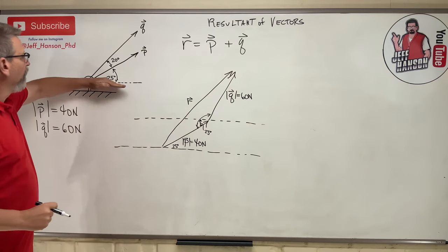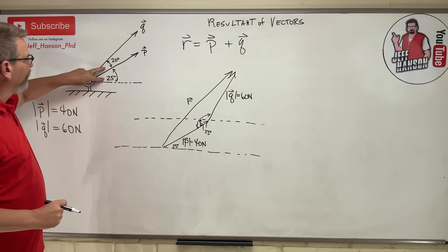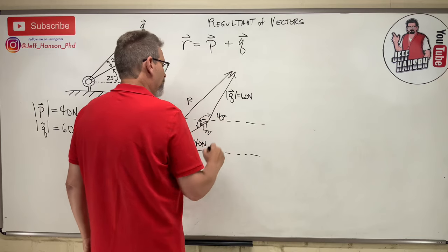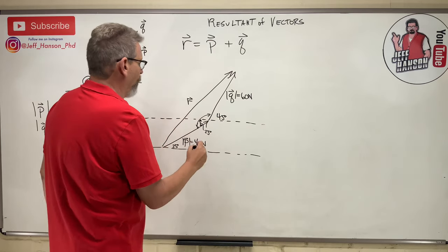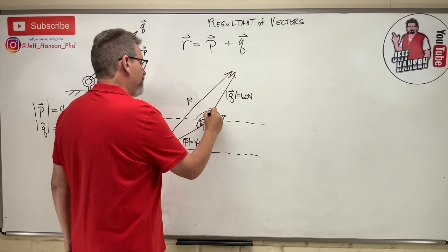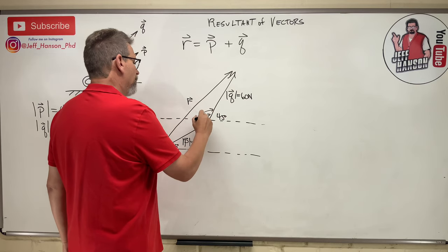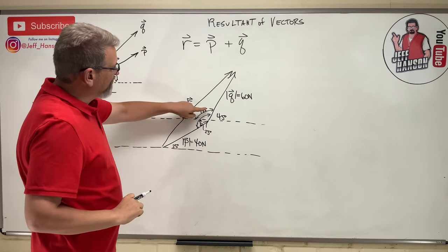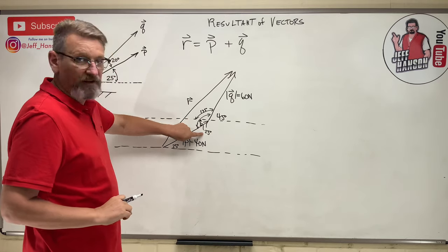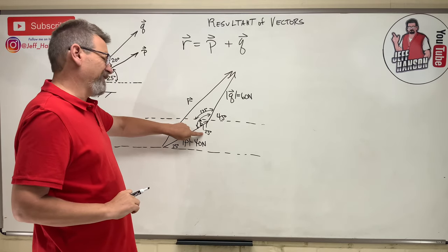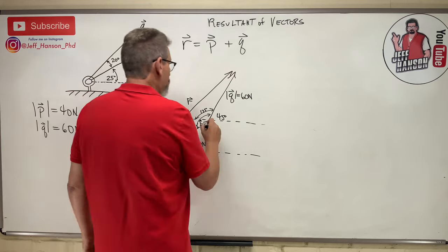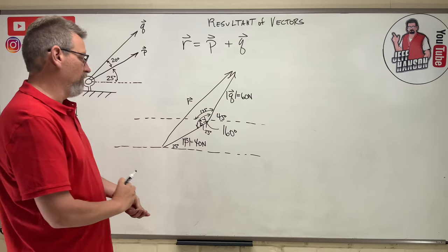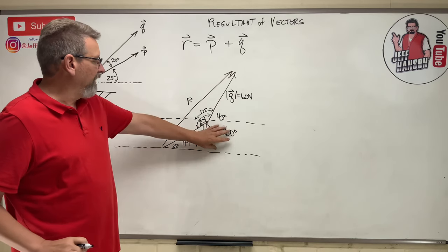From horizontal up to vector Q, that's 45 degrees. If that's 45, then this angle in here must be 135. So this interior angle is 135 plus 25, which is 160 degrees. Now we know side, angle, side — that sounds like law of cosines.